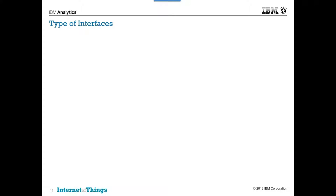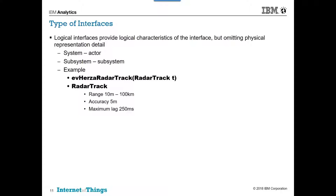So what do we mean by interface? First, let's talk about the kinds of interfaces. Logical interfaces specify logical characteristics of the interface but omit physical representation detail. This can be a system-to-actor or subsystem-to-subsystem interface. For example, here's a service EV — a radar track — with a parameter called radar track type. Radar track gives you a range to your target, say 10 meters to 100 kilometers, with accuracy of plus or minus 5 meters and a lag time of 250 milliseconds. We haven't specified the data format — whether it's a double, float, long, or scaled integer — because that's not relevant to logical properties.